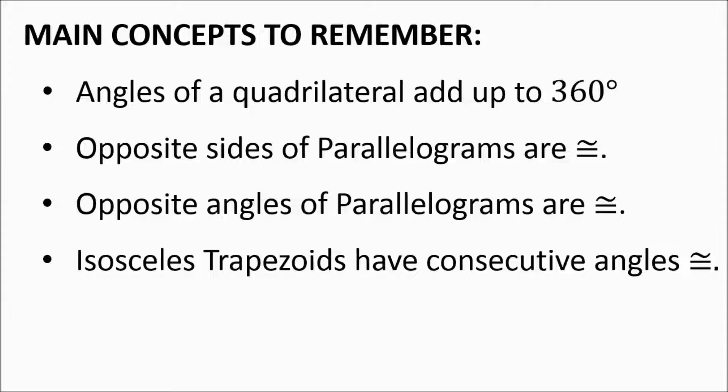Isosceles trapezoids have consecutive angles congruent. Consecutive meaning next to each other, one right after the other — two on one side are congruent, two on the other.